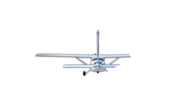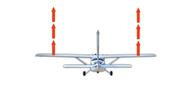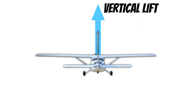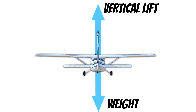When an airplane is in straight and level flight, the lift that the wings produce goes straight up — we call this vertical lift. To keep ourselves from descending during straight and level flight, our wings only need to produce enough lift to offset the weight of our aircraft. That's why in straight and level flight, lift and weight are equal.